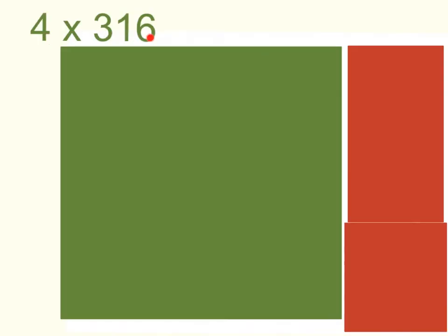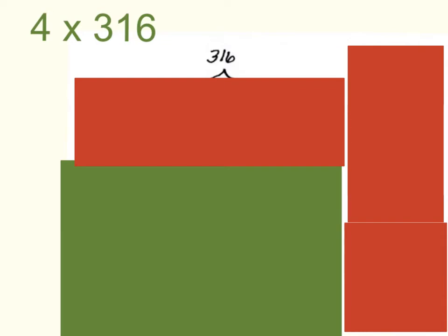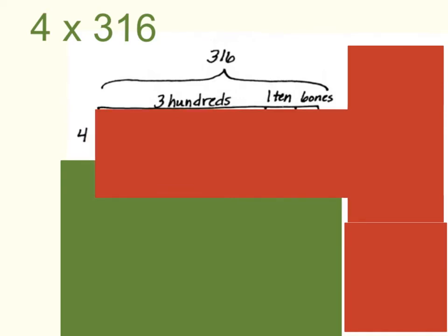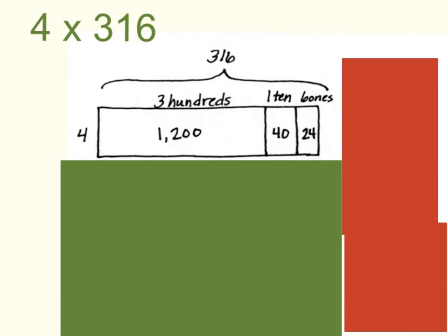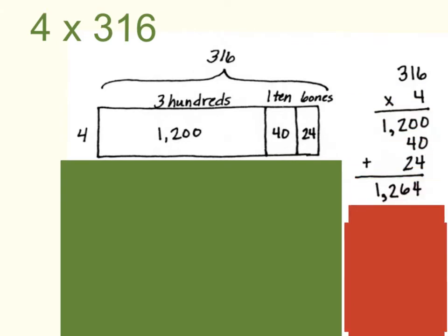Now let's solve 4 times 316 using our area model. Remember the formula for area is area equals length times width. Let's start out with 316 on top, and we're going to multiply 316 times 4. First, we need to break this up into expanded form, so that would be 300 plus 10 plus 6 ones, and then we multiply each one of those by 4. Start out in our hundreds: 4 times 3 hundreds equals 12 hundreds. Next we move to our tens: 4 times 10 equals 40. And then finally, we multiply 4 times 6, which equals 24 ones. Now that we have all of our partial products, we need to go ahead and add those together, and we get a final sum of 1,264.